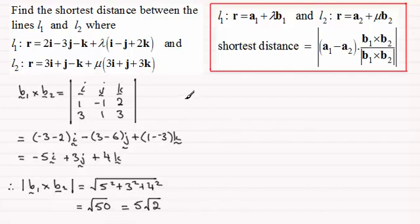So we just section this part off. Then the next part is to work out the difference between the vectors A1 and A2, our points on the line. So if we take A1 as 2i minus 3j minus k and A2 is 3i plus j minus k, subtracting those two vectors gives us minus i minus 4j.